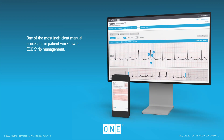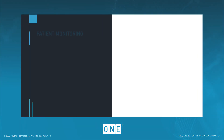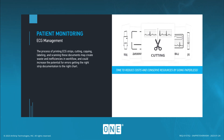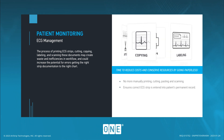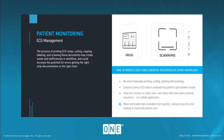One of the most inefficient manual processes in patient workflow is ECG strip management. Time and resources spent creating ECG strips manually could better be used for patient care. The process of printing ECG strips, cutting, copying, labeling, and scanning these documents may create waste and inefficiencies in a workflow, and could increase the potential for errors getting the right strip documentation to the right chart.